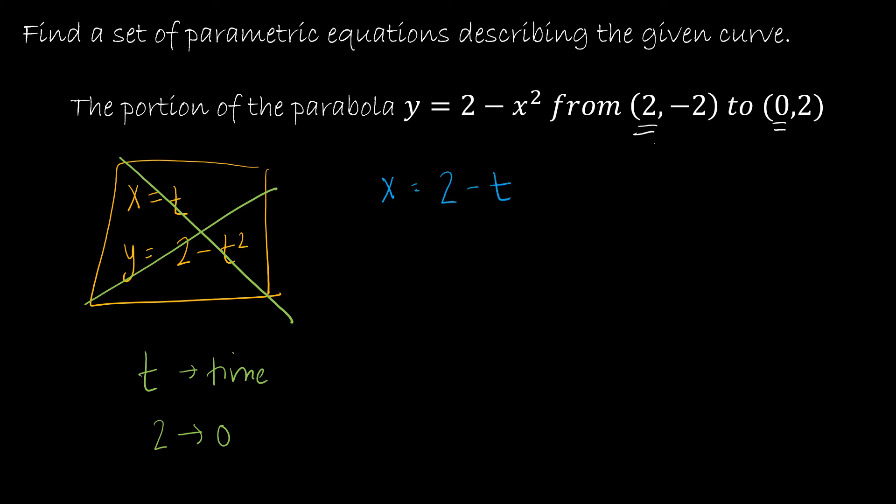Now what would that accomplish? Well, then, if I plug in 0 for t, then x is 2, and that's good. And if I plug in 2 for t, then x is 0, and that's good. So that's going to give me, it's basically going to solve my problems. So if x is equal to 2 minus t, then I have to solve for y.